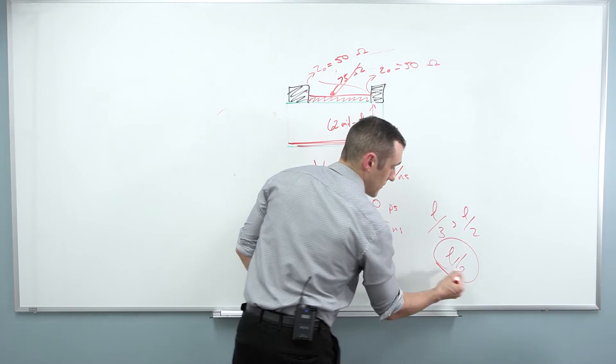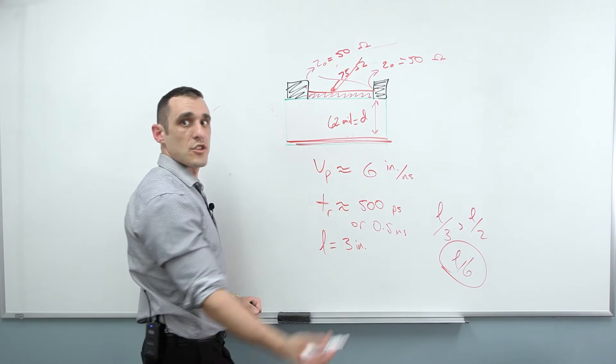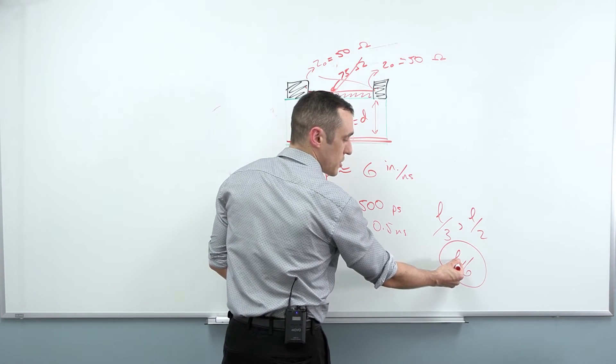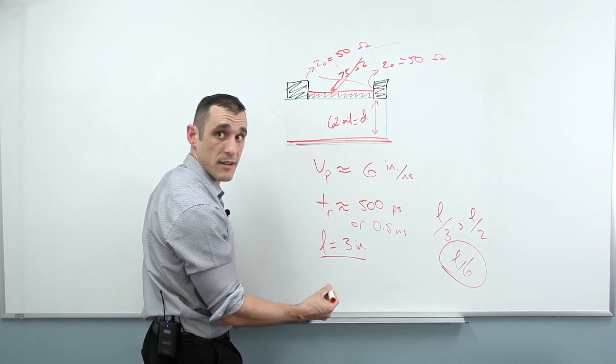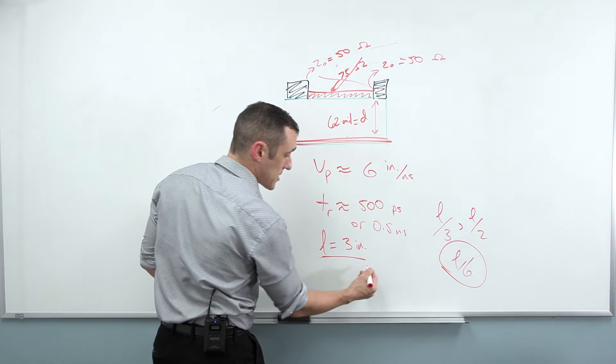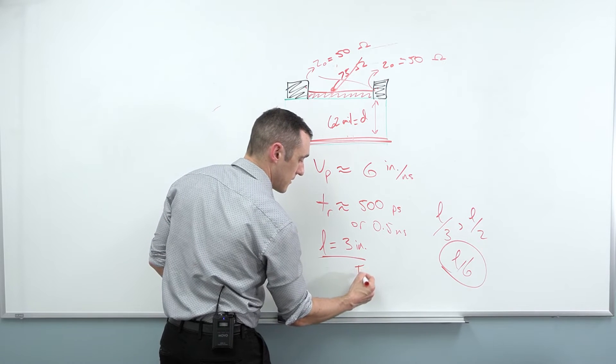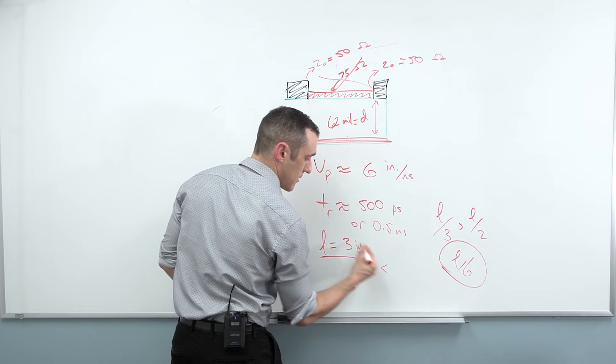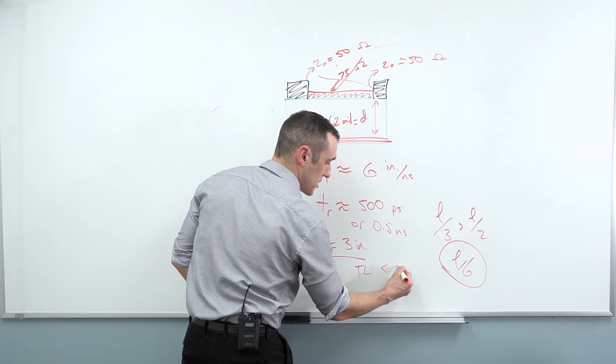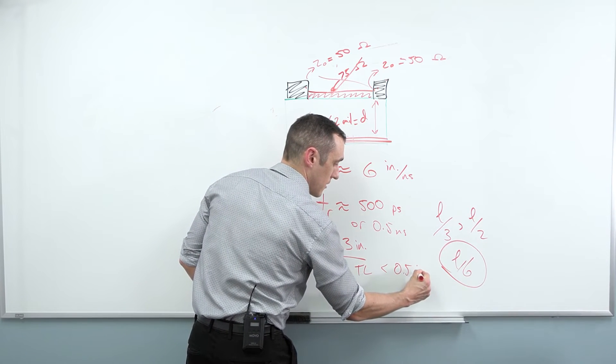So just as an example, let's pick the L over six value. So meaning we want to keep the total length of the trace less than L right here divided by six. That means my trace length, we'll call it TL, should be no greater than three divided by six, which is 0.5 inches.